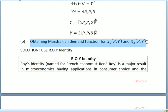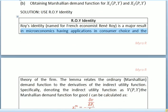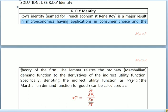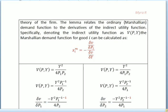For question b, we are going to obtain the Marshallian demand function for x1 and x2. We are going to solve using Roy's Identity. Roy's Identity is quite familiar in microeconomics — Roy is the name of the French economist René Roy. The formula of Roy's Identity is given as: x Marshallian equals negative (∂V/∂p) divided by (∂V/∂y).